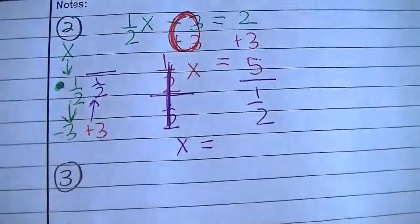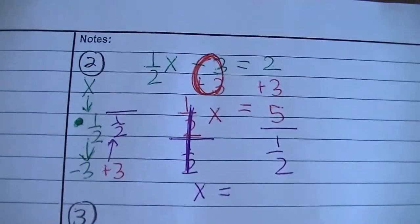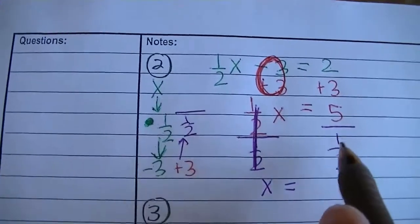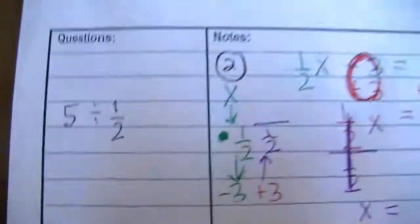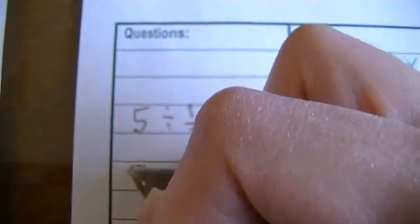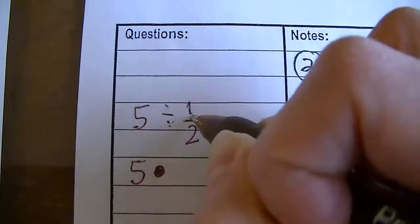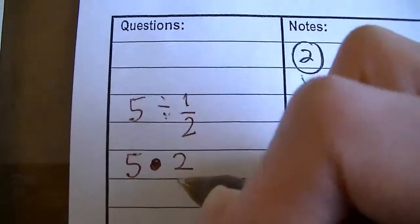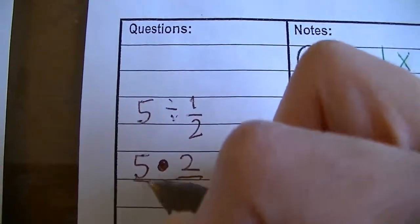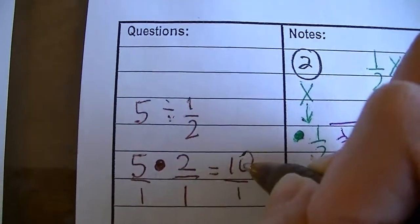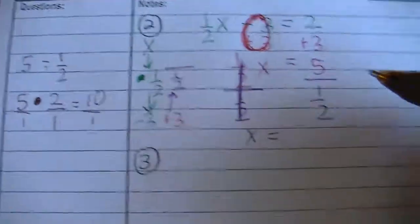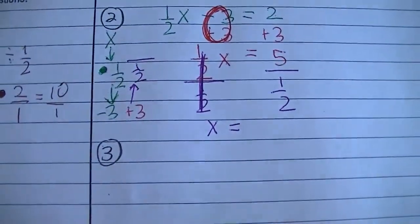5 divided by 1 half — if you're not sure how to do that, write it out to the side. You may remember keep, change, flip: keep that first number, change division to multiplication, and flip that next term. So it becomes 5 times 2 over 1 times 1. 5 times 2 is 10, 1 times 1 is 1, so it's really 10 divided by 1, which is 10. So 5 divided by 1 half is 10.